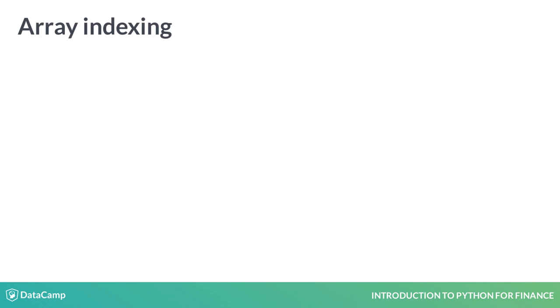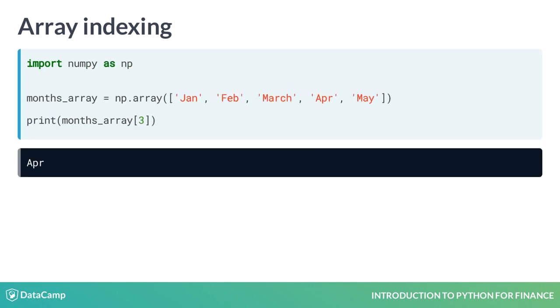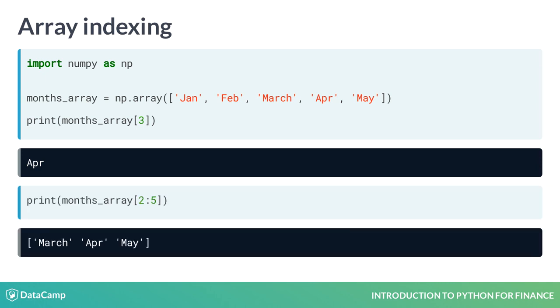Similar to Python lists, arrays can be indexed and sliced to subset elements. You can select a specific index element of an array using indexing notation, or you can slice a range of elements using the slicing notation specifying a range of indices.